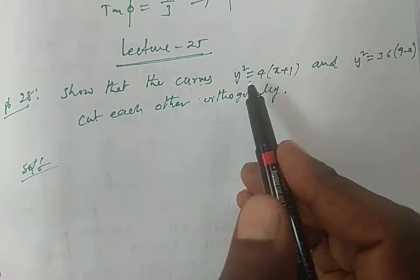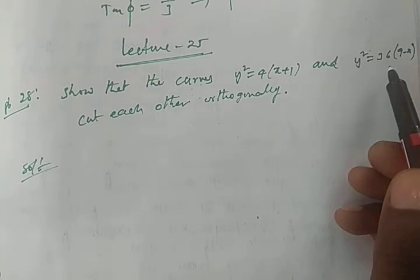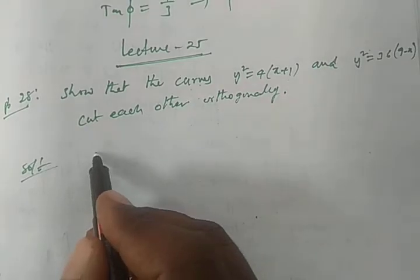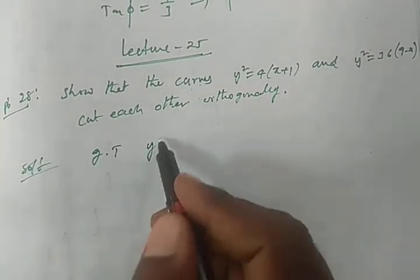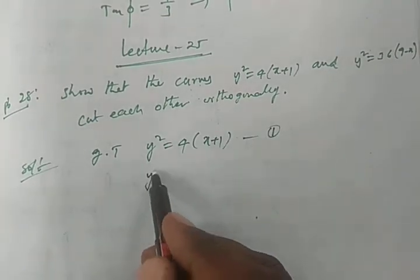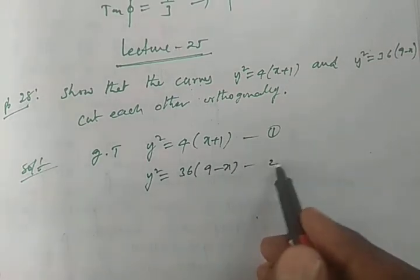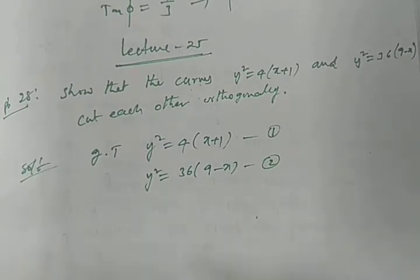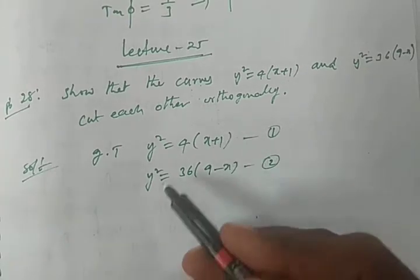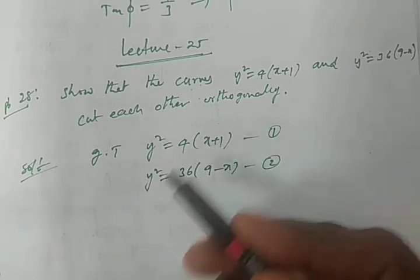Show that the curves y² = 4(x+1) and y² = 36(9−x) cut each other orthogonally. Write the given curves: equation 1 is y² = 4(x+1), and equation 2 is y² = 36(9−x). We have to show these two curves cut each other orthogonally, meaning the angle between them at the intersecting point is 90 degrees.